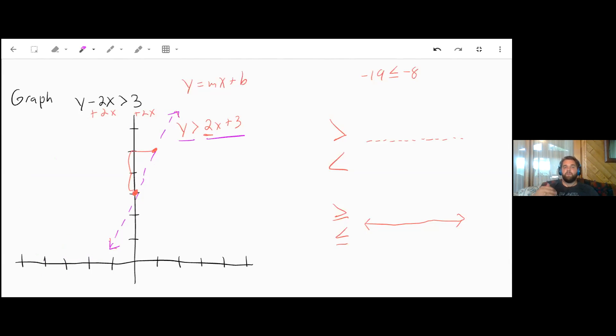Another way is to pick a point not on that line and see if it works. Let's try (0, 0). Plug in 0 for x and 0 for y. Is 0 greater than 2(0) + 3, which is 3? Is 0 greater than 3? No, it's not. So the side with (0, 0) doesn't work. That means we have to shade the other side of the line.